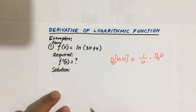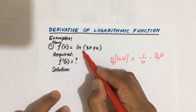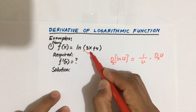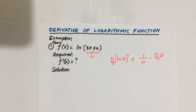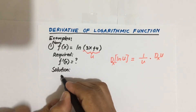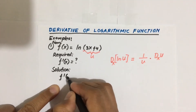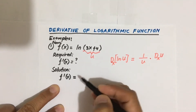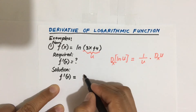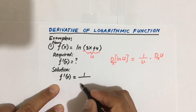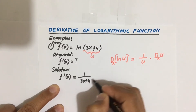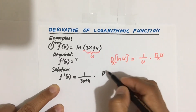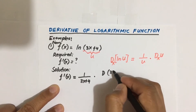In our given function, u is equal to 3x plus 4. So for our solution, F prime of X is equal to — from the formula — 1 over u, where u is 3x plus 4, times the derivative of u, where u is 3x plus 4.